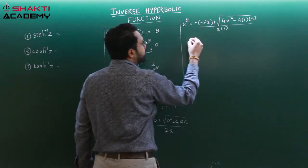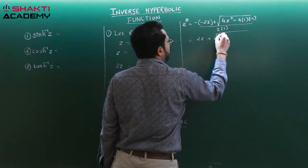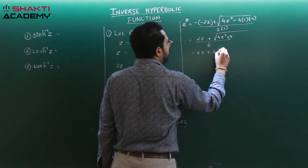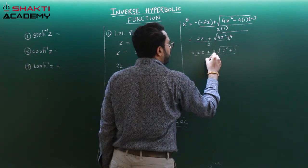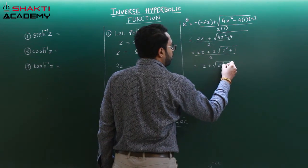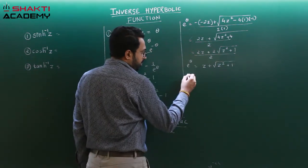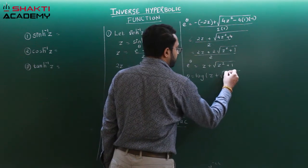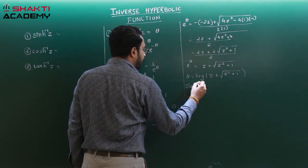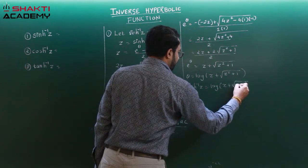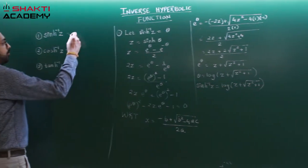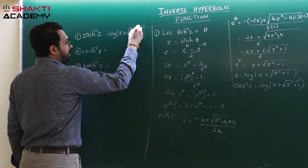Applying the formula: e^theta equals (2z + √(4z² + 4)) / 2. Taking 4 common inside the root, it comes out as 2, and all the 2s cancel. So e^theta equals z + √(z² + 1). Therefore theta equals log(z + √(z² + 1)) to the base e. But theta is sinh⁻¹(z), so sinh⁻¹(z) = log(z + √(z² + 1)). This is the formula for sine hyperbolic inverse.